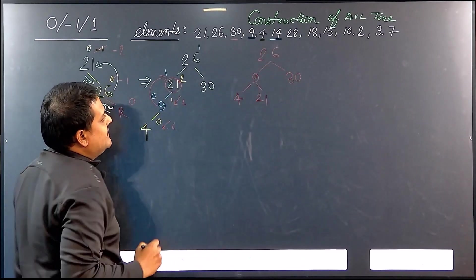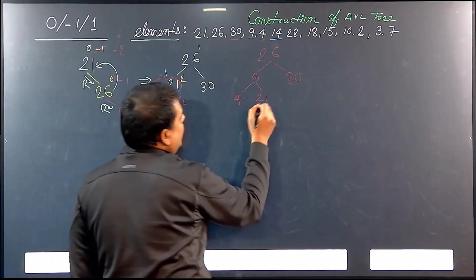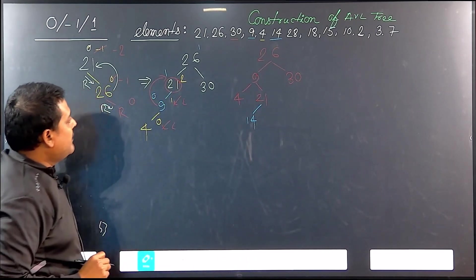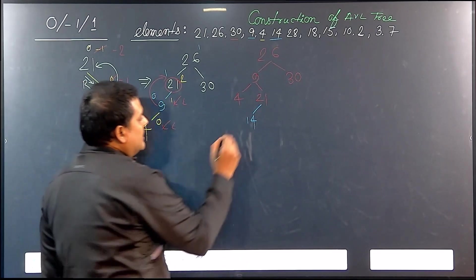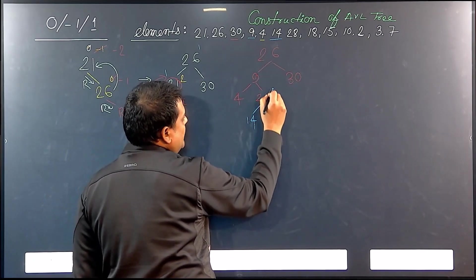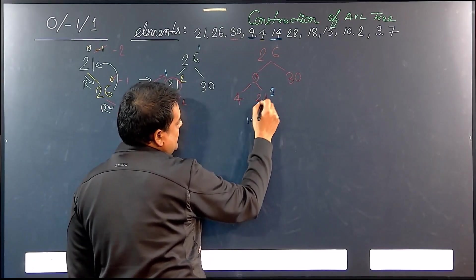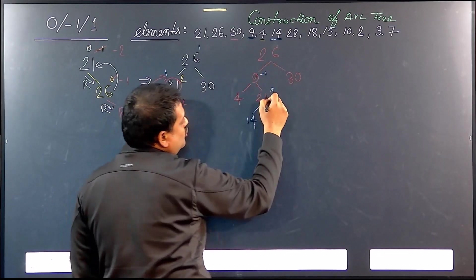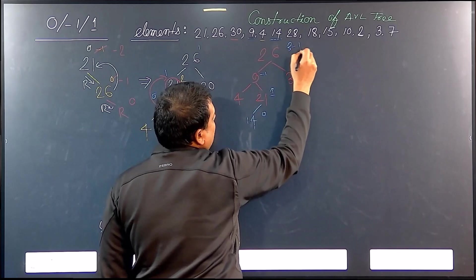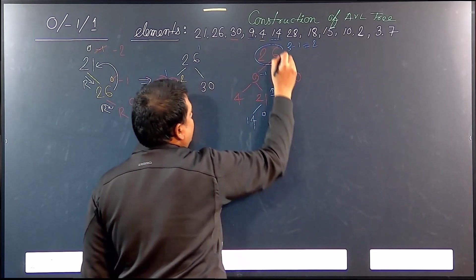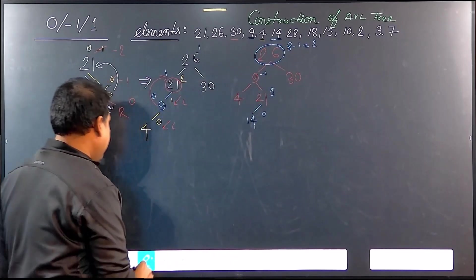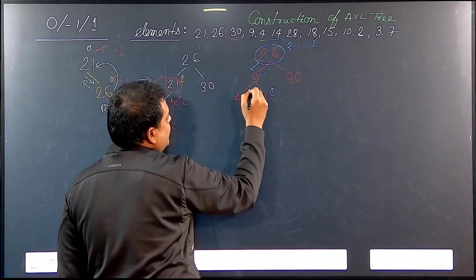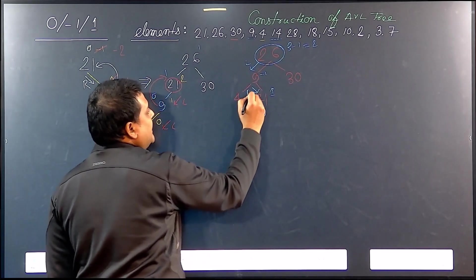Now we are having another element — that is 14. Since 14 is less than 26, greater than 9, and less than 21, so 14 is inserted as the left child of 21. When 14 is inserted, the balance factors are: 0 for 14, then 1 minus 0 = 1 for 21, and for 9 it becomes 2. For the node above, we get 3 minus 1 = 2. So there is a problem here.